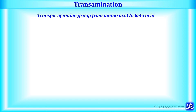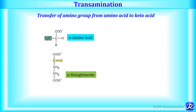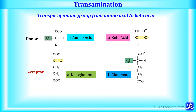Transamination is the transfer of amino group from an amino acid to a keto acid. The amino acid is the donor of the amino group and the keto acid — alpha-ketoglutarate — is the acceptor. The amino group from the donor amino acid is donated to alpha-ketoglutarate to form another amino acid and a keto acid, resulting in the formation of glutamate and another keto acid.